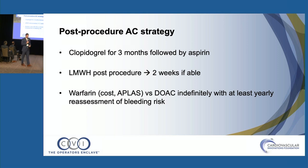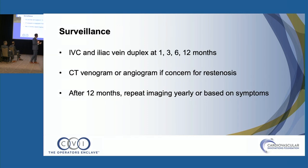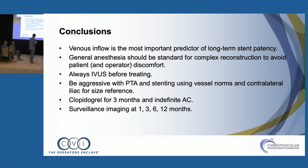Post-procedure anticoagulation strategy: I use clopidogrel for three months, low molecular weight heparin for two weeks while things calm down, then transition to oral anticoagulation — preferring a DOAC unless the patient has antiphospholipid antibody syndrome or can't afford it, in which case warfarin is used. Surveillance: duplex at 1, 3, 6, and 12 months; if there's any question about restenosis, CT venogram or angiography. After 12 months, repeat yearly or based on symptoms. In conclusion: venous inflow is the most important predictor of long-term patency. Use general anesthesia, always IVUS before treating, be aggressive with PTA and stenting, Plavix for three months, indefinite anticoagulation, and survey these stents closely.